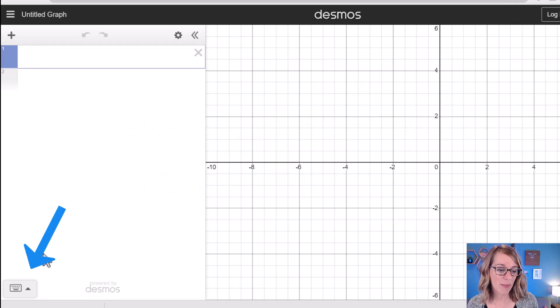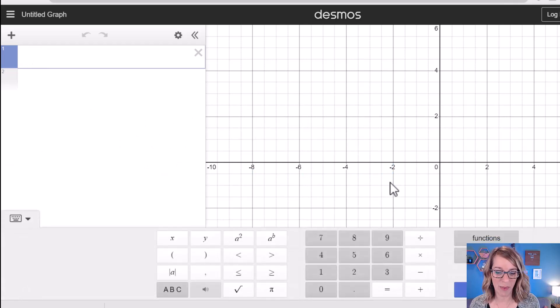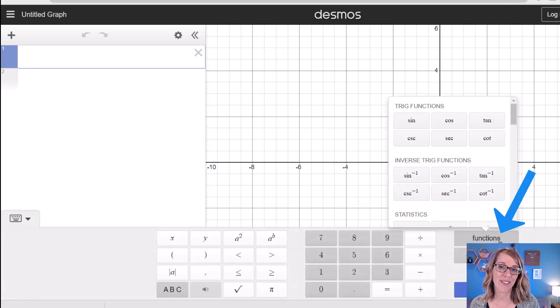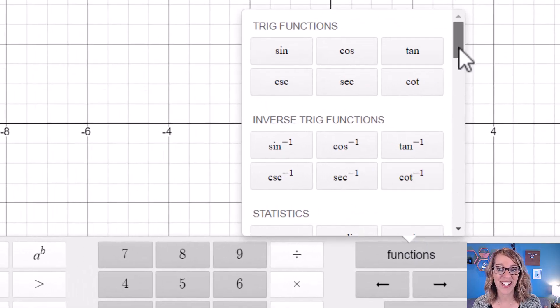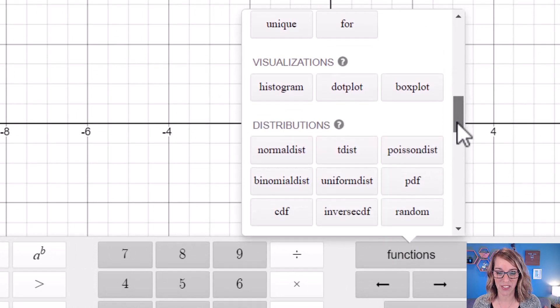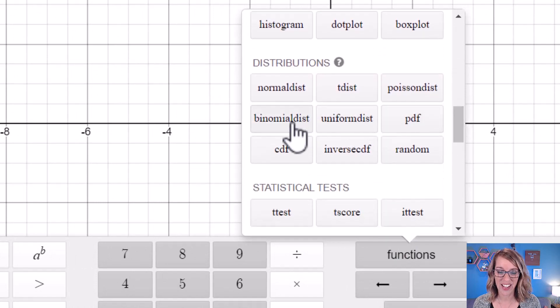I'm going to go into my keypad here. Let me go ahead and open up the keypad. Then I want to click on functions so I can grab that binomial probability. It's a distribution, so I'm going to scroll down until I see my distributions. There it is. And I'm going to choose that binomial dist.